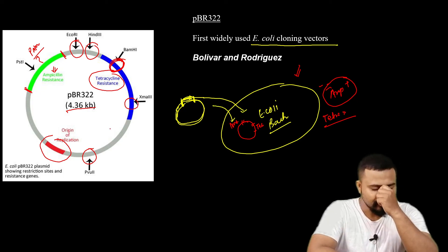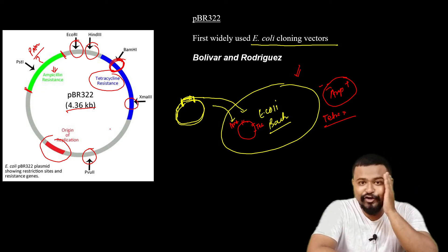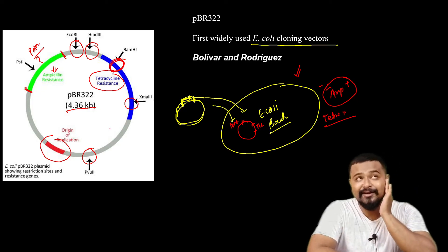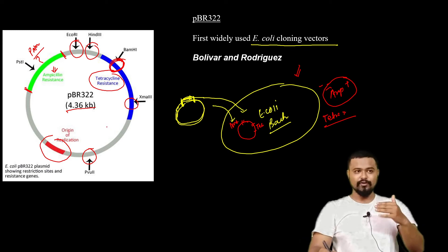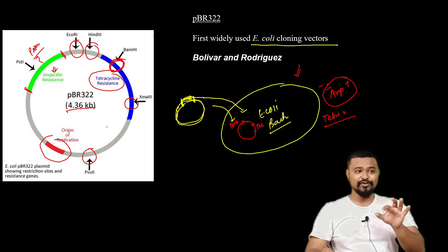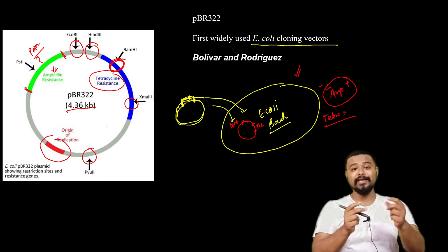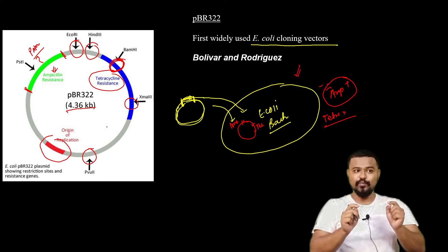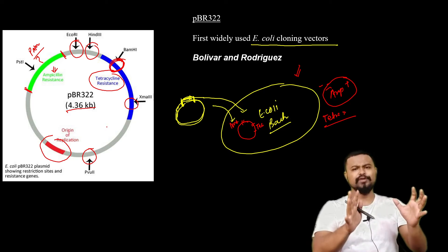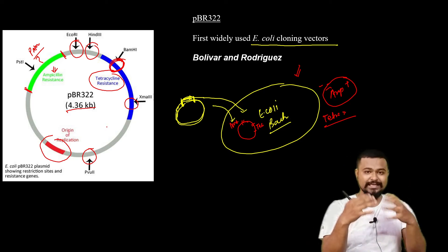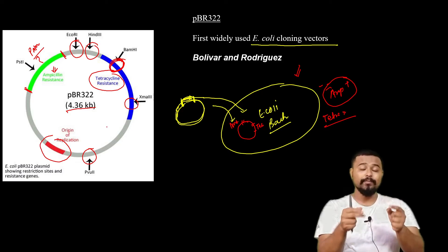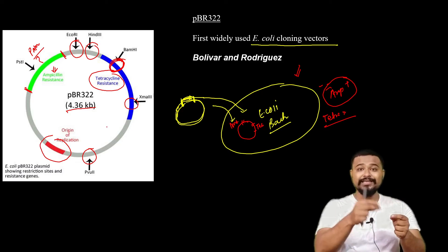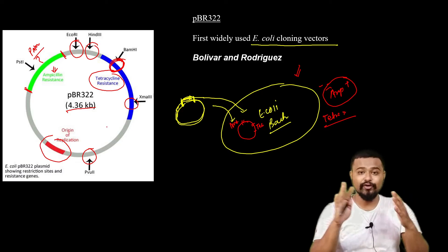The cutting sites include PBU2 and XMA3 cutting sites. These cutting sites are very important. The restriction enzyme cutting sites help us know details about where to insert the gene of interest and the size of the vectors.